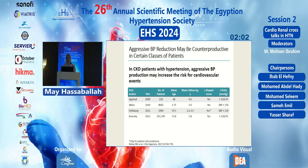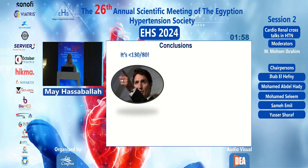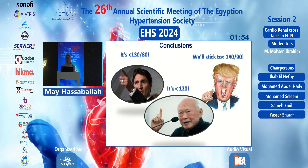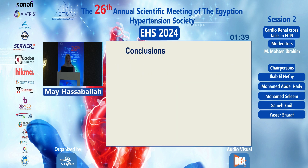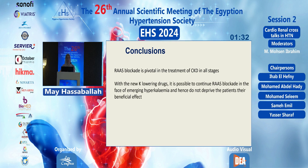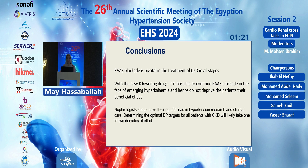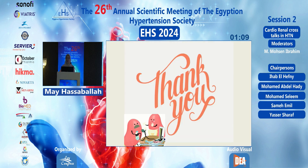In conclusion, it is not simply a matter of 130/80, 140/90, or less than 120 — individualization is the key. Blood pressure goals should be individualized according to clinical judgment, weighing risks and benefits for each patient, recognizing that one size does not fit all. RAS blockade is pivotal in all CKD stages. With new potassium-lowering drugs, it is possible to continue RAS blockade despite emerging hyperkalemia. Determining optimal targets will likely take one to two more decades of research.